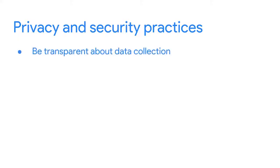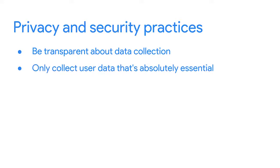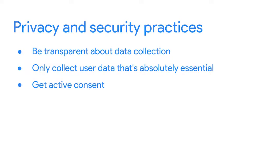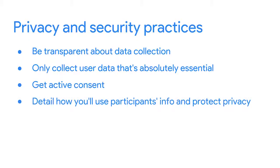First, be transparent about data collection — let your users know what data is being collected. Next, only collect user data that's absolutely essential for your study. For example, if you don't need to know a participant's date of birth, don't ask for it. Also, get active consent from your users to have their data collected and used — participants receive a consent form which they sign and return to the researcher. Provide detail about how you'll use participants' information and protect their privacy — for example, you might share their feedback with your team but anonymize their quotes by using 'person one,' 'person two,' and so on.